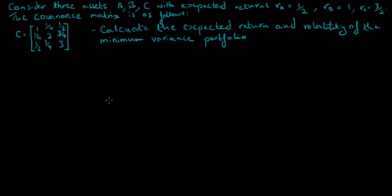The example that we will cover is as follows. Consider three assets A, B, and C, with expected returns RA equals 1/2, RB equals 1, and RC equals 3/2. We are given the covariance matrix C, and we are asked to calculate the expected return and volatility of the minimum variance portfolio.